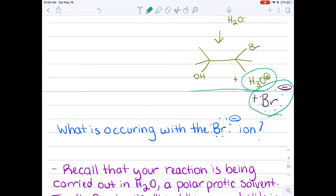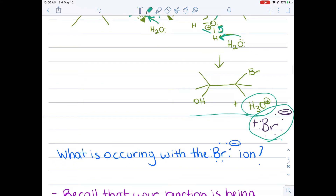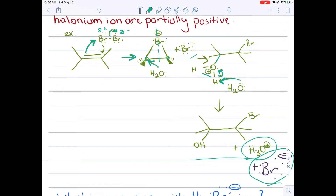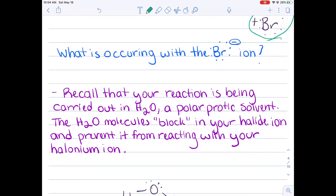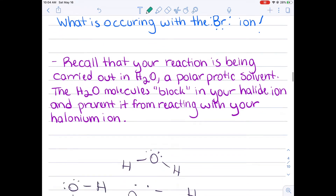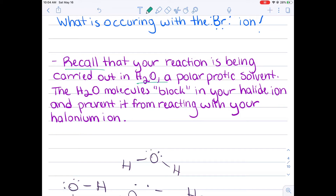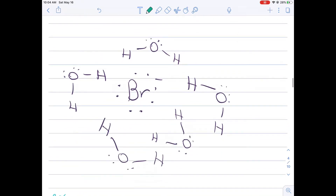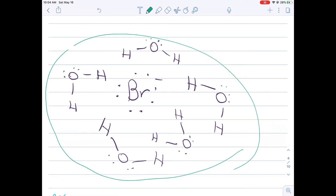So here's a good question: what about the negatively charged bromine atom? Why doesn't it attack one of these carbons during this stage instead of water? One big thing to remember with these reactions is that they're being carried out in water itself, which is a polar protic solvent. So you have very strong hydrogen bonds occurring, and those hydrogen bonds will cause a block in your halide ion and prevent it from reacting with the halonium ion. So you can imagine something like this occurring.